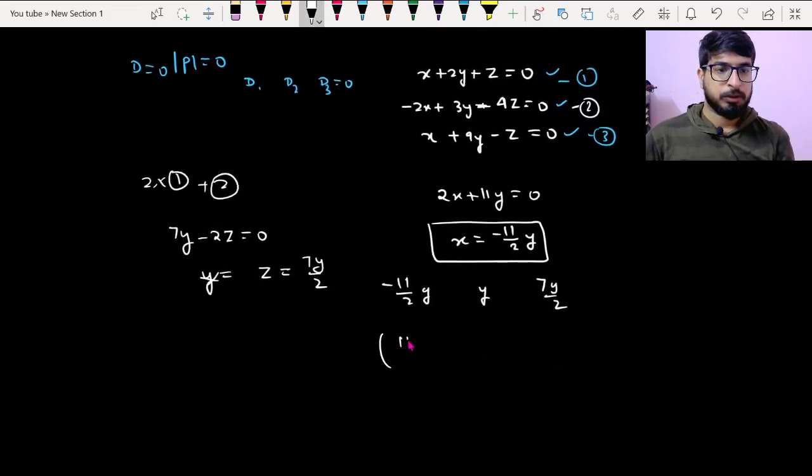x squared plus y squared plus z squared is 1.